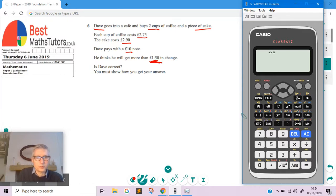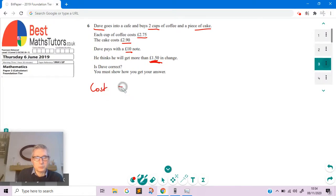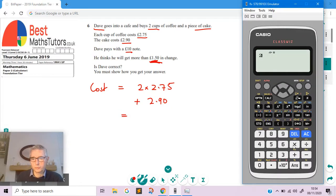Since this is a calculator paper, we're going to use a calculator for this. The total cost is going to equal two times £2.75 for the coffee, and then we're going to add on £2.90. So I'm going to go two times £2.75.